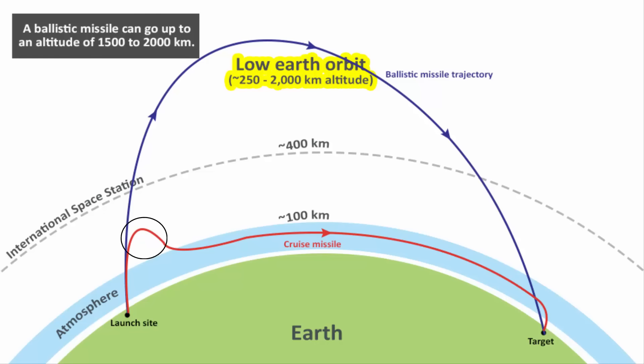On the other hand, a cruise missile can go up to an altitude of a few hundred kilometers or even less. It again has to come down at a low altitude to cruise in the air before hitting the target.